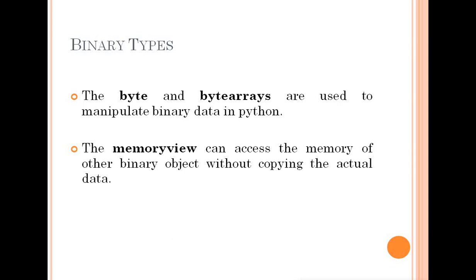Binary Types include Bytes, Byte Arrays, and Memory View. These are the 7 data types of Python: String, Numerical, Sequence, Mapping Type, Set Type, Boolean, and Binary Types. We will discuss other parts in the next video. Thank you, see you again!